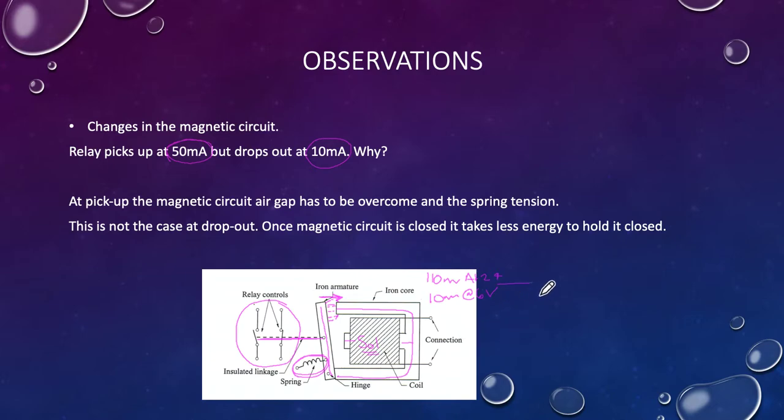We dropped it down to the dropout point at 6 volts and got 10 milliamps. Somewhere in the middle was the pickup point at 50 milliamps. We were able to drop much lower than 50, only took 10 before there was insufficient magnetic field to hold it in and the spring would then pull the thing open. So changes in the magnetic circuit: the relay picks up at 50 milliamps but drops out at 10. At pickup, the magnetic circuit has an air gap and spring to overcome, but at dropout it doesn't have to overcome those things and drops out much earlier at 10 milliamps.